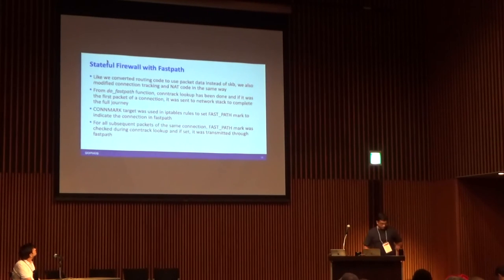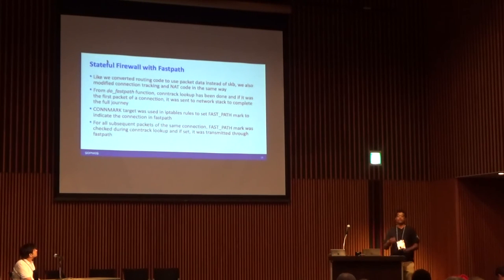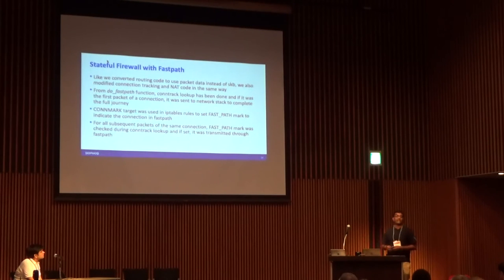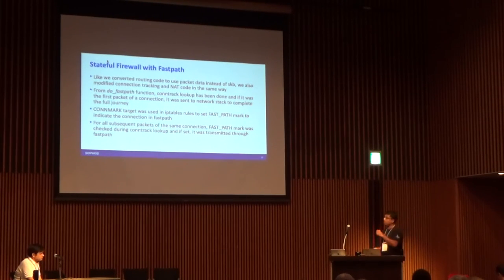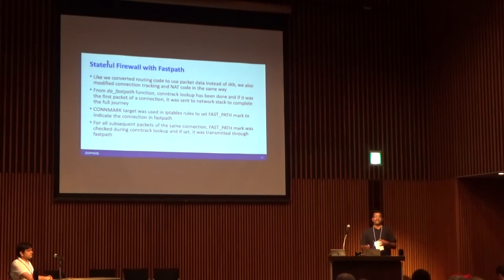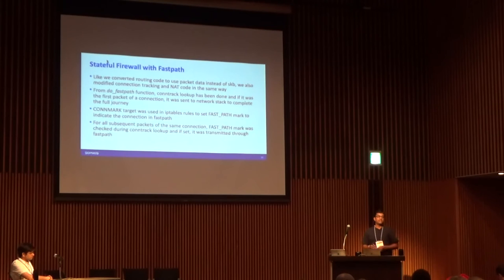Now with the basic framework ready, similar to how we converted the routing code, we converted the connection tracking and NAT code on the same lines. From the do_fast_path function, we first do a connection lookup. The connection lookup no longer has a central lock, so it scales very well.